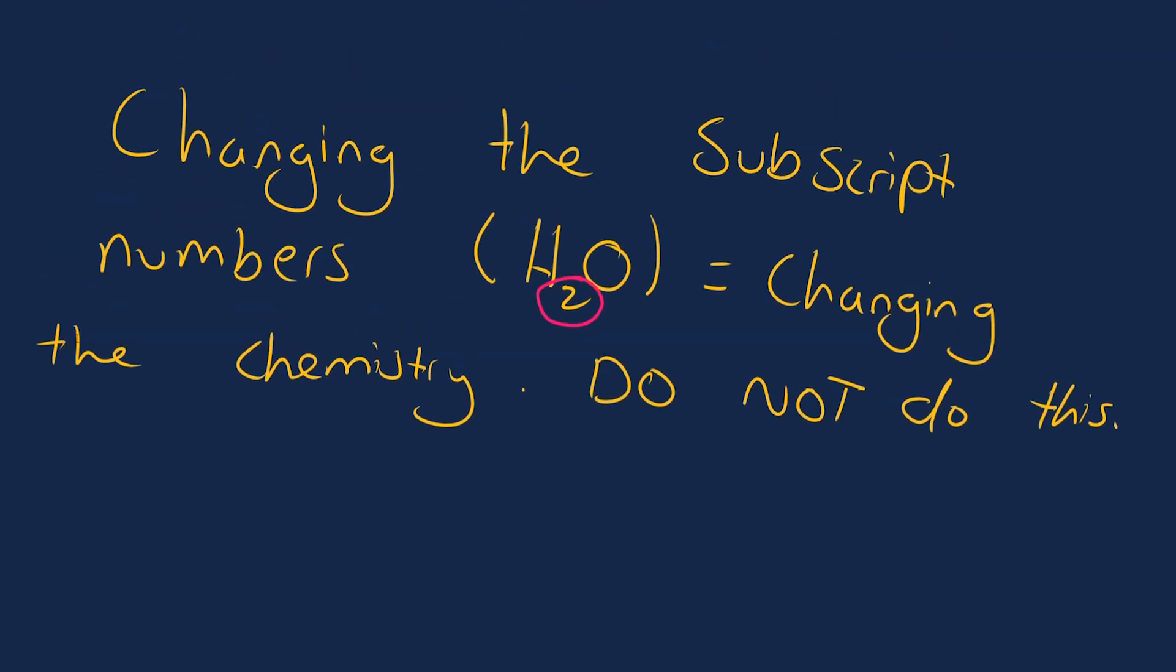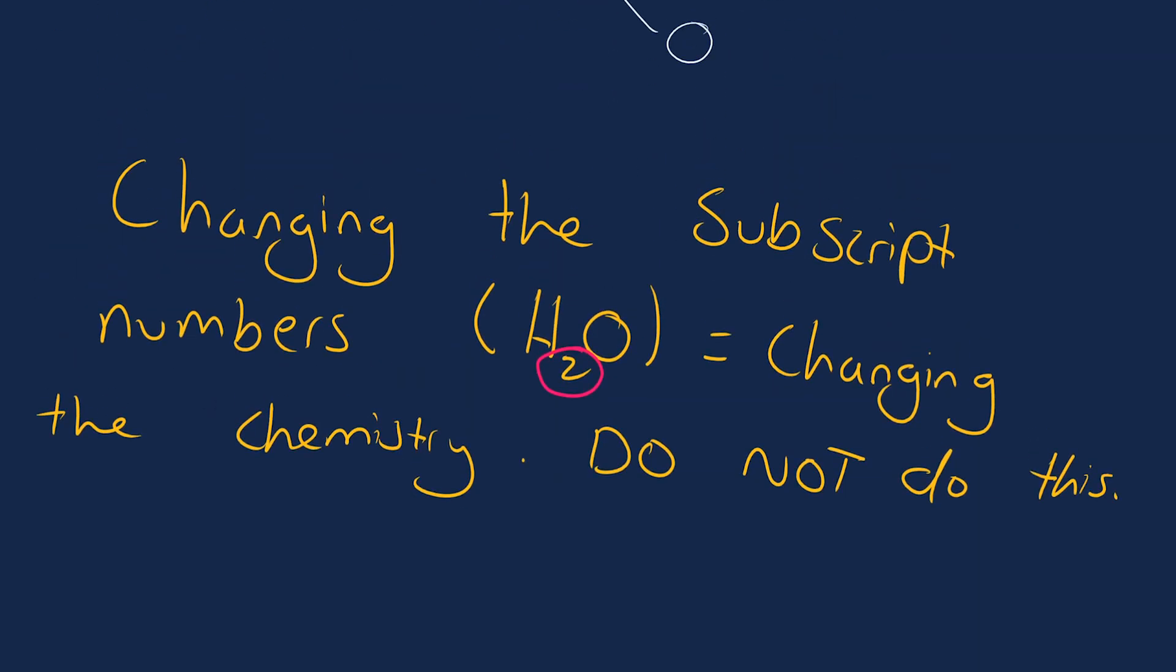We've looked at what a balanced chemical equation is, how to balance chemical equations, and common mistakes that are made, predominantly with changing subscript numbers instead of changing large numbers in front of the molecules.